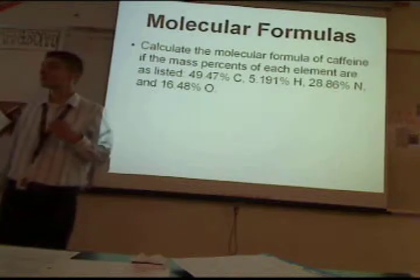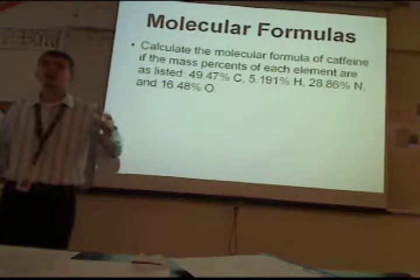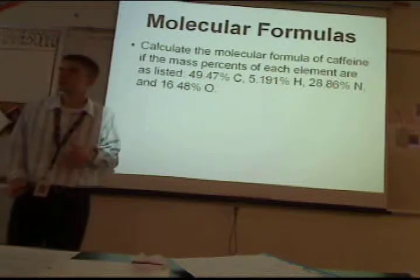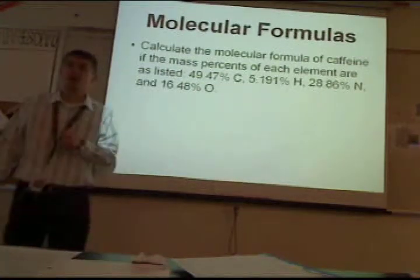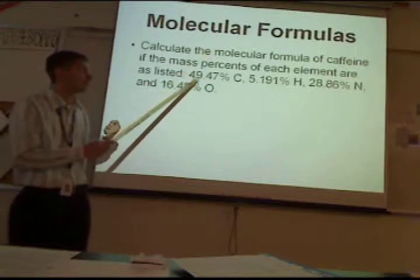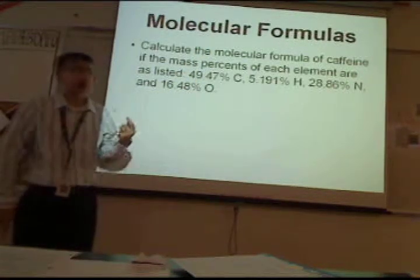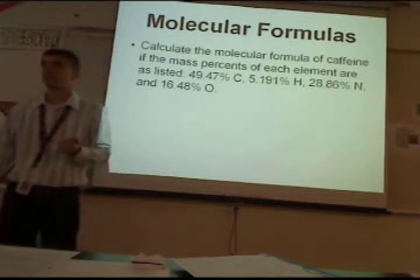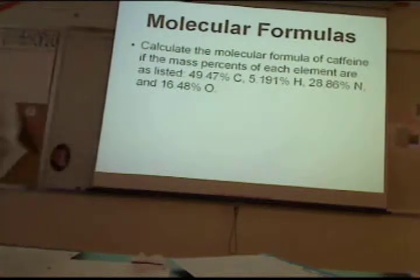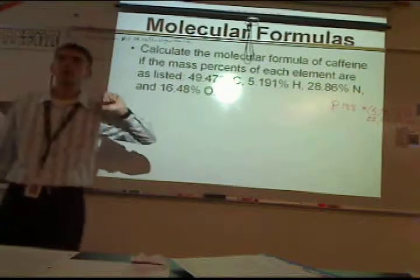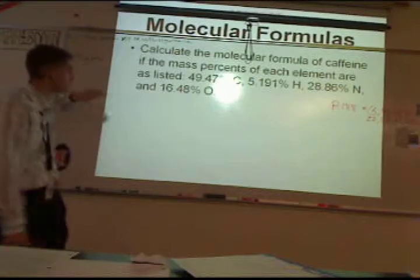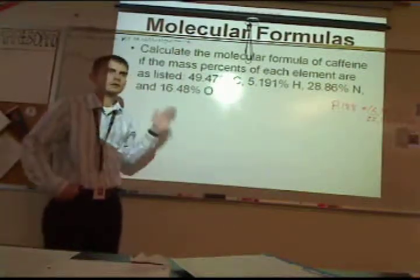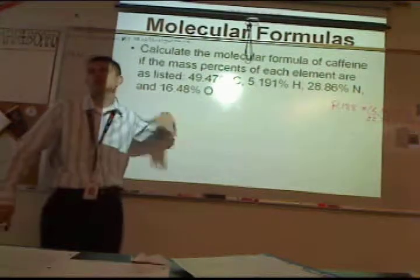Here's a hint for this one: just pretend you have 100 grams of the substance. If you have 100 grams, you'll know how many grams of each element you have — because 49.47% of 100 grams would be 49.47 grams. You can take 49.47% of 194, do that math, get your actual grams, and then go grams to moles to see your ratios. Or you can use the 100-gram assumption — that's the way I prefer to do it.